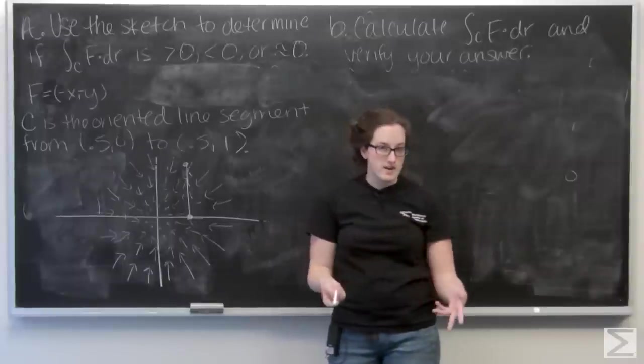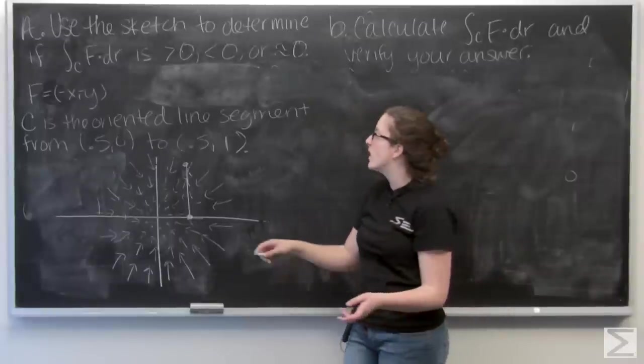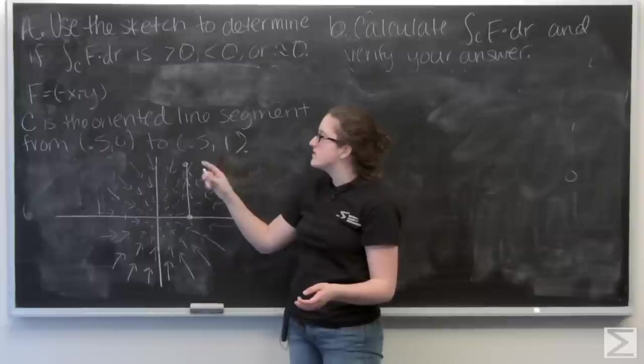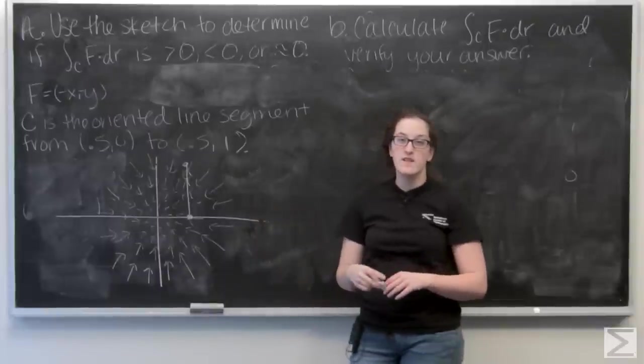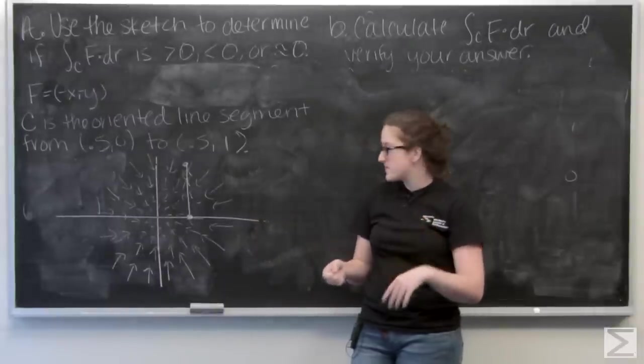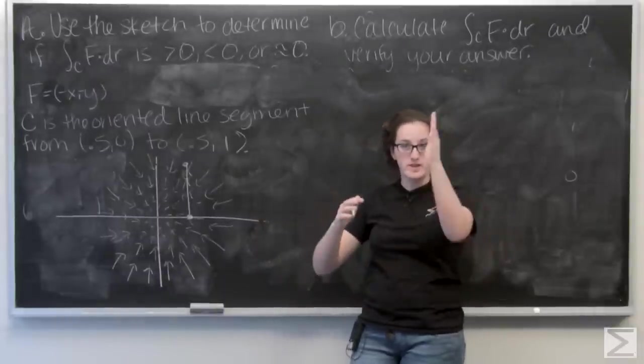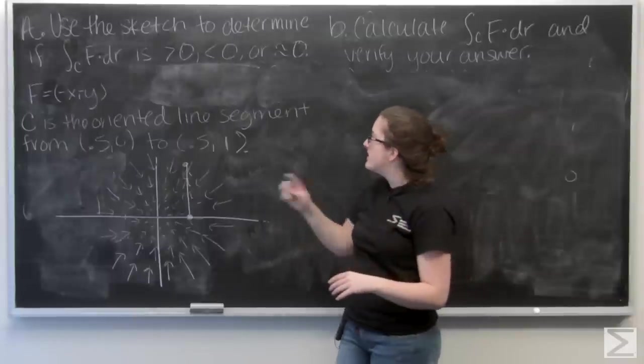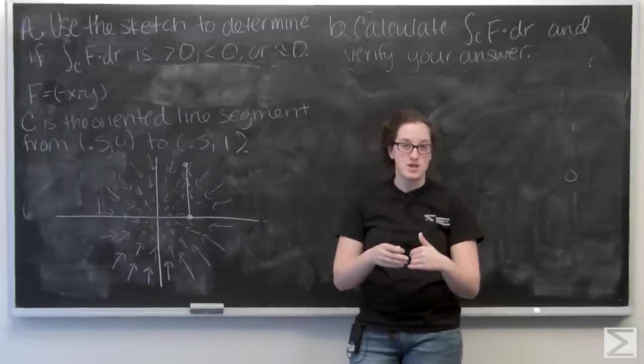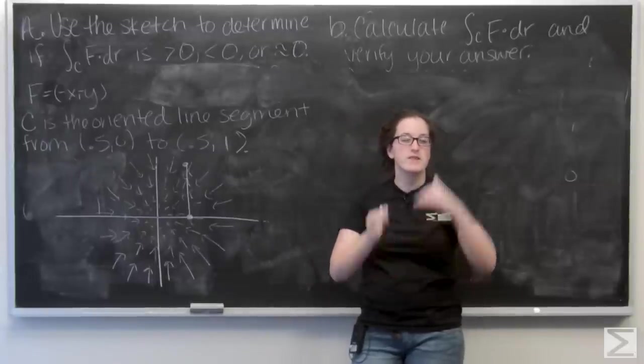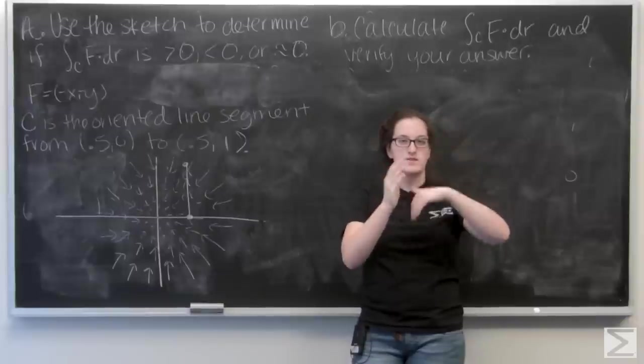So how can I decide the sign of this? Well, if my force field goes in the same direction as my curve, the line integral is going to be positive because the force field is kind of helping the curve along. And then it's going to be less than zero if the force field is in the opposite direction of my curve, so the force field is going against it, trying to stop it.